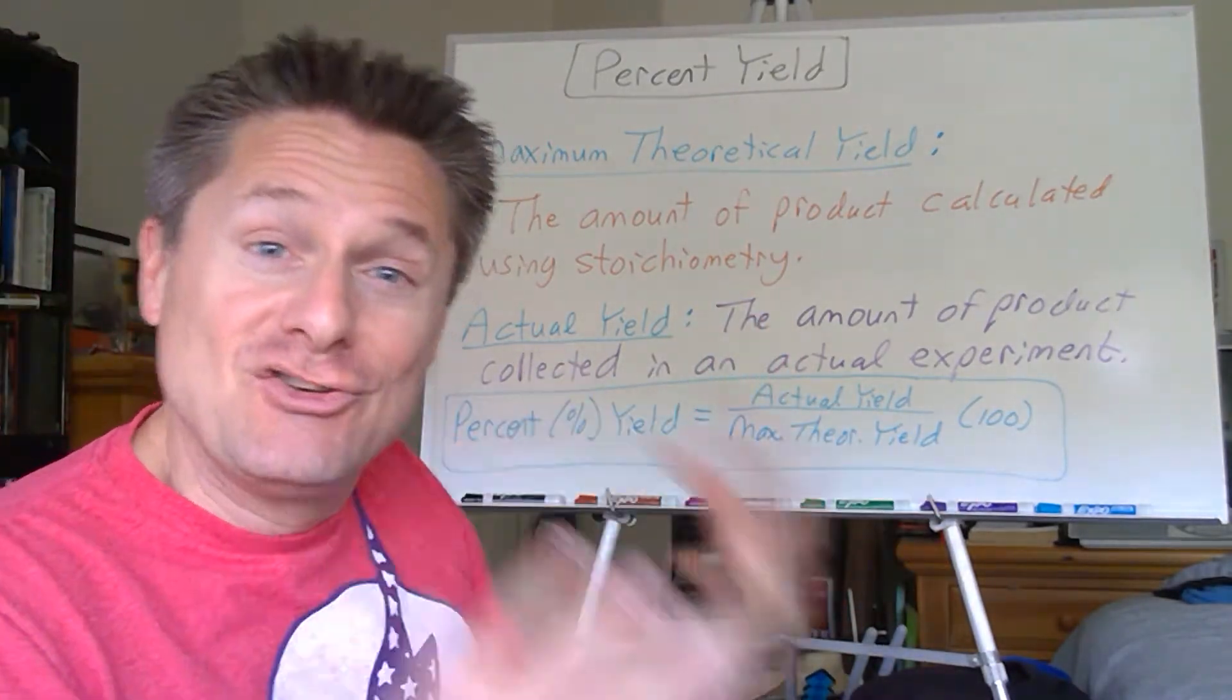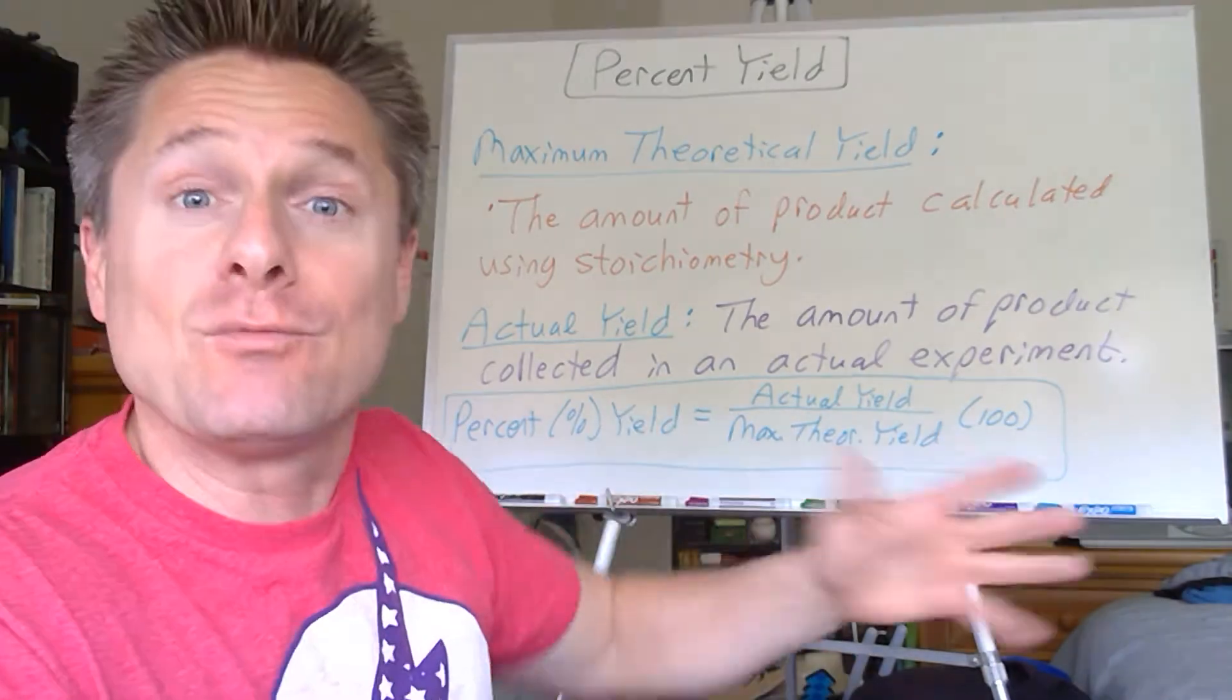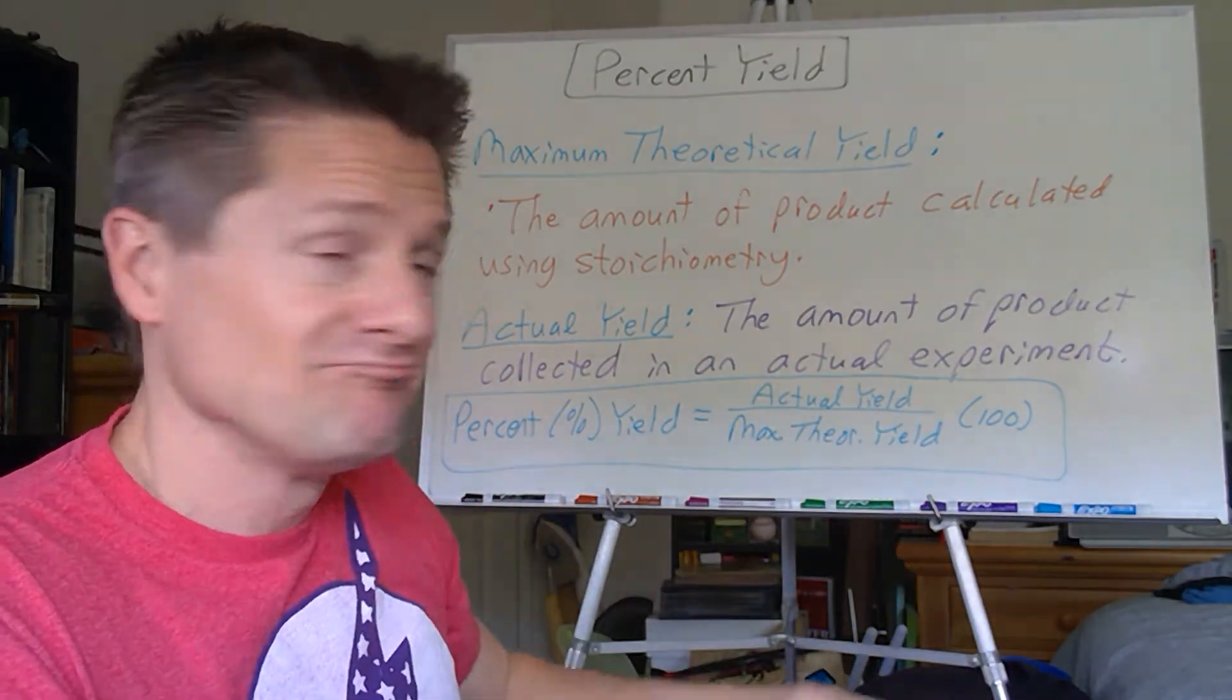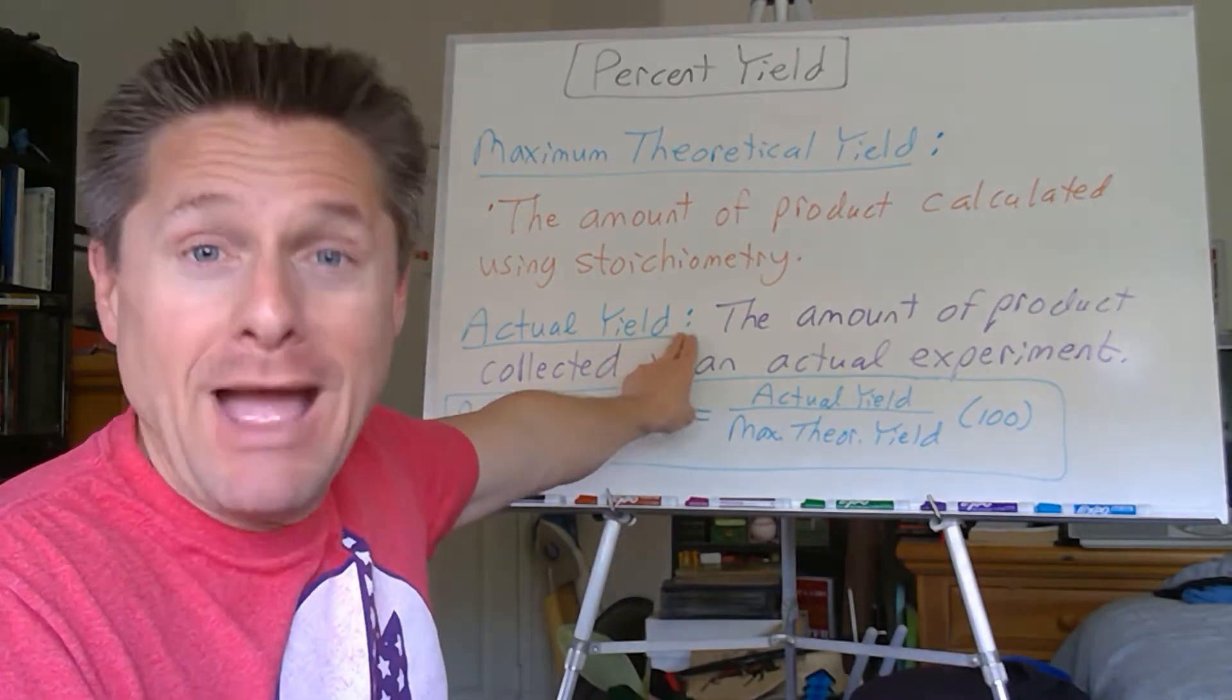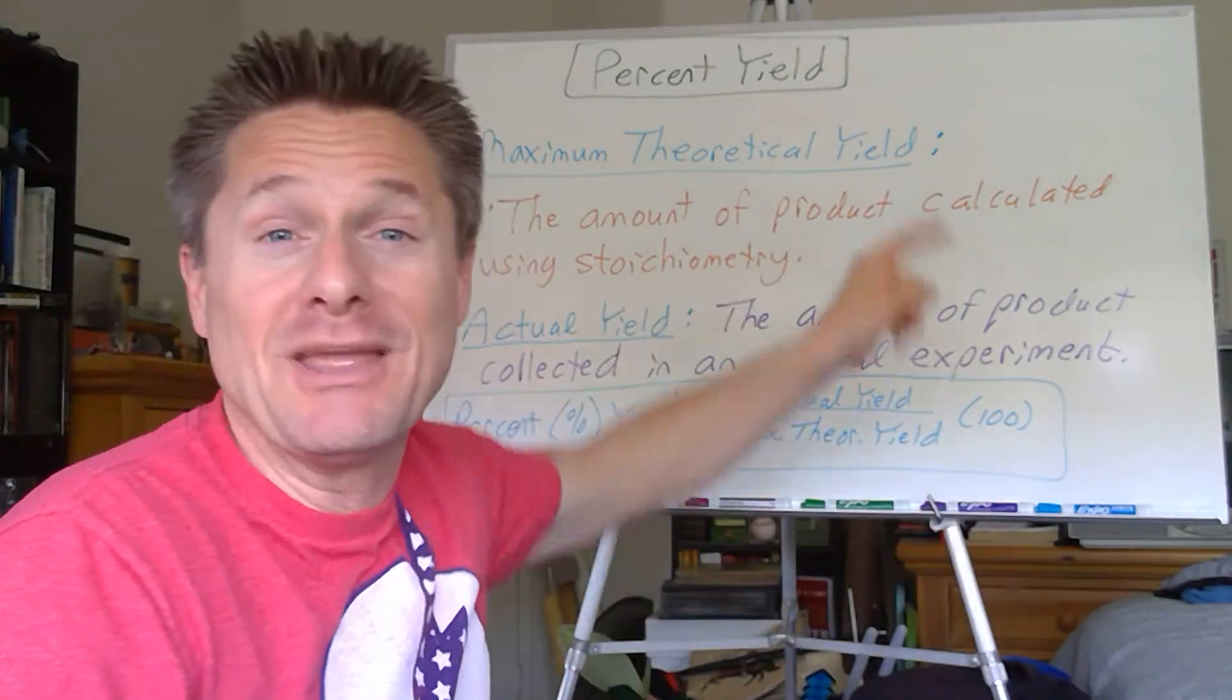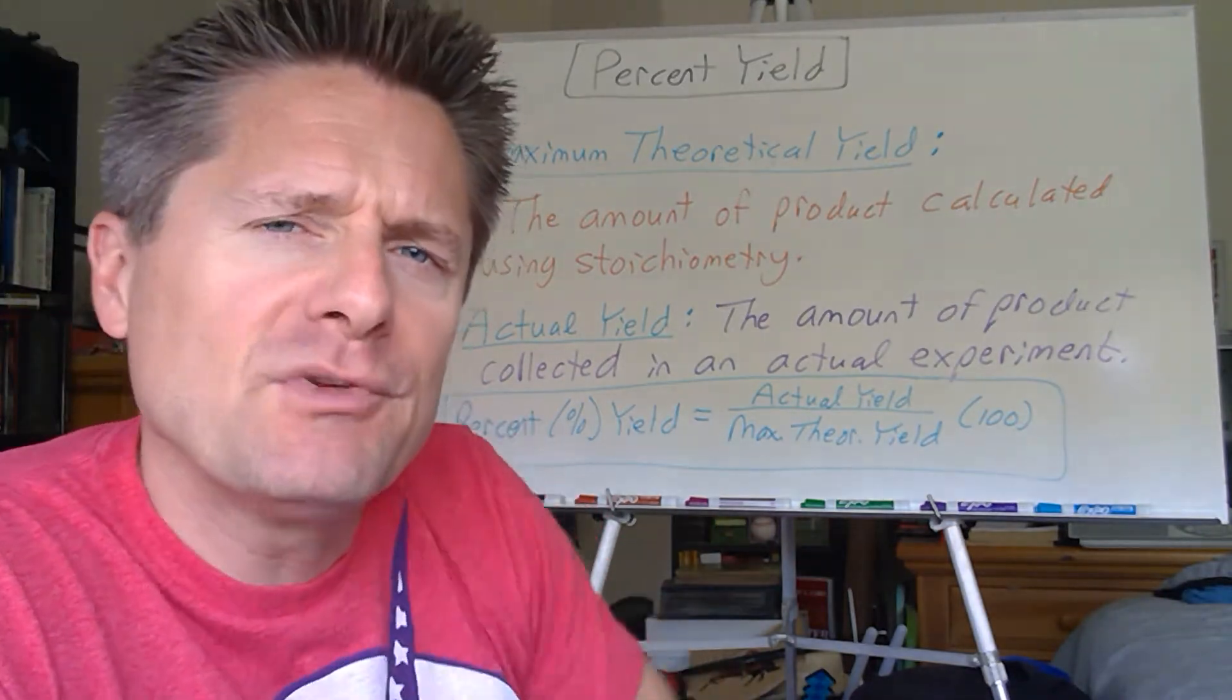What you actually collect, let's say we do this reaction in the lab, we calculated it, we take the same starting masses, we do it and we get a different number. That's your actual yield, the amount you actually collect from an experiment. Almost always that's going to be lower than the maximum theoretical yield. Welcome to the real world.